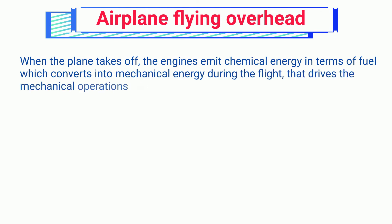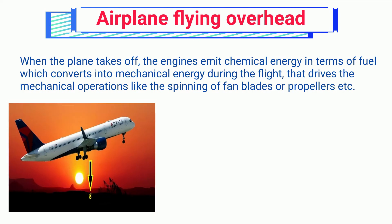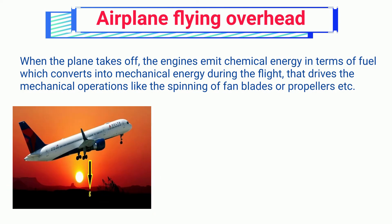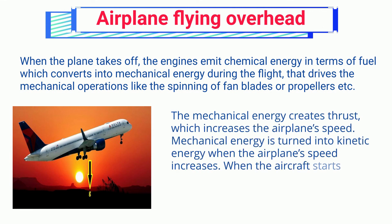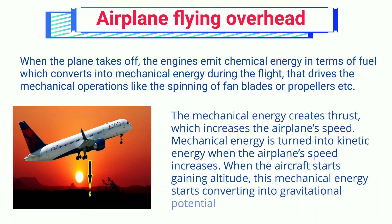When a plane takes off, the engines emit chemical energy in terms of fuel, which converts into mechanical energy during flight, driving mechanical operations like the spinning of fan blades or propellers. The mechanical energy creates thrust which increases the airplane's speed, turning mechanical energy into kinetic energy. When the aircraft starts gaining altitude, this mechanical energy starts converting into gravitational potential energy.